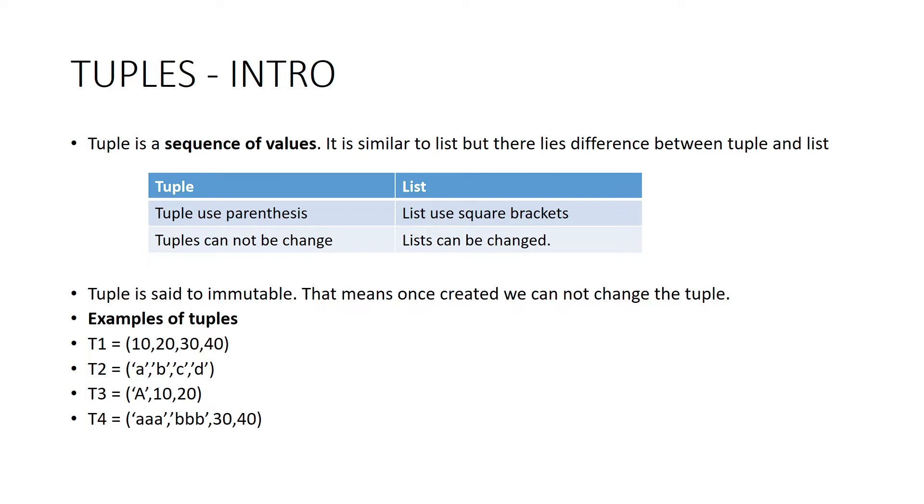There are four types of examples. One is numerical example: T1 equals 10, 20, 30, 40. The second one is variable example - it can be string or character or any type. Tuples can hold various types of data: individual characters like A, B, C, D, combination of characters, or complete strings with numerical values in combination.